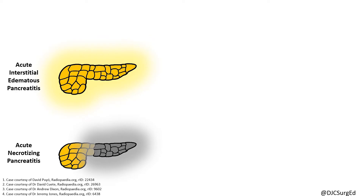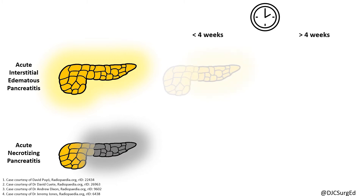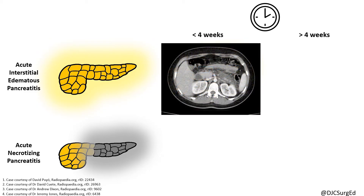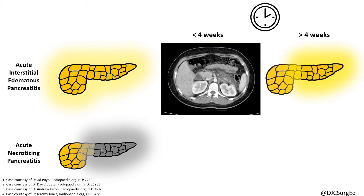Once the type of pancreatitis is confirmed, the local complication is defined by the duration of onset. In acute interstitial edematous pancreatitis, fluid collections less than four weeks from presentation are acute peripancreatic fluid collections — homogenous, enzyme-rich simple fluid collections with no surrounding wall. Beyond four weeks, the fluid collection becomes encapsulated and well circumscribed and is called a pancreatic pseudocyst.